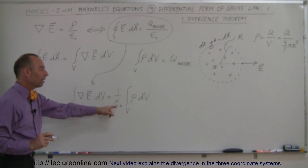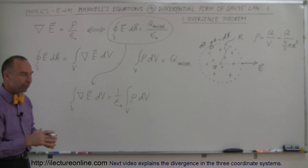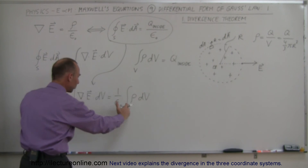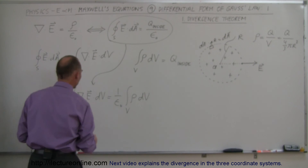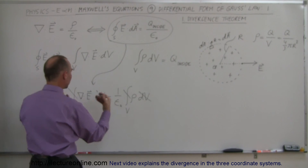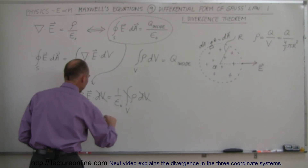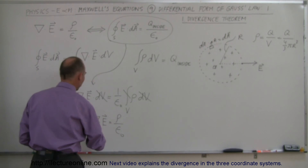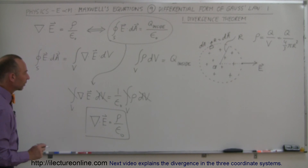Now, 1 over epsilon sub nought is a constant, so it's not affected by the integral. What we can now do is take the derivative of both sides — a triple derivative — to get rid of the integral by taking the triple derivative of both sides of the equation, which eliminates the dV and the integral sign. We're then left with the divergence of the electric field equals the charge density divided by epsilon sub nought, which is the differential form of Gauss's Law.